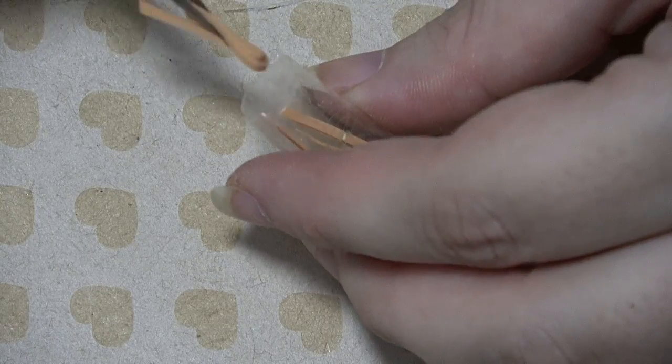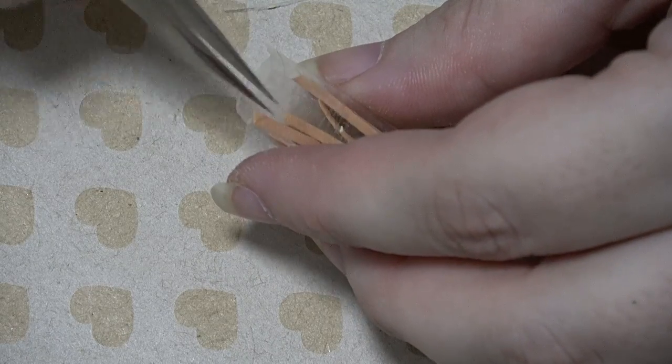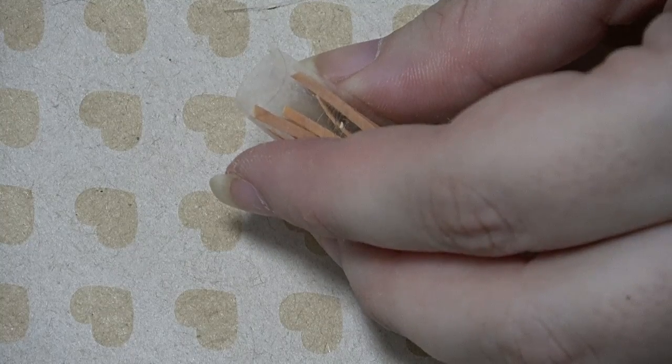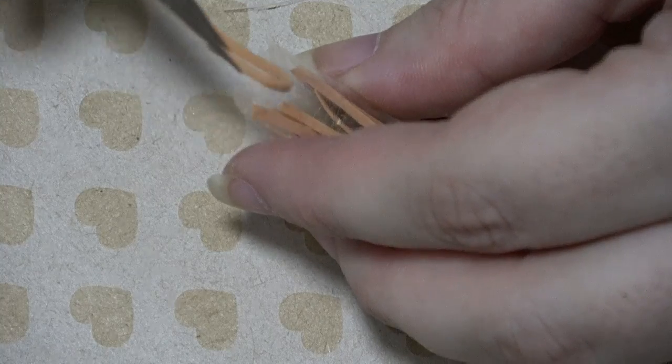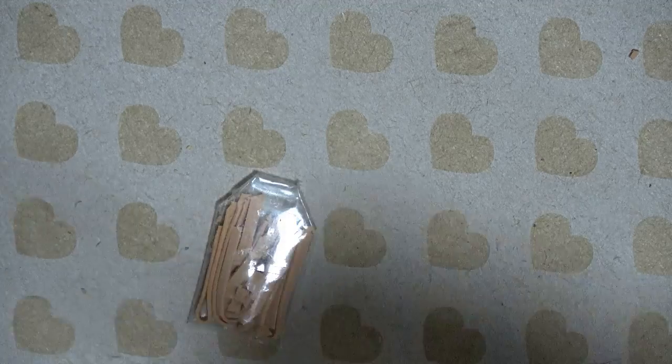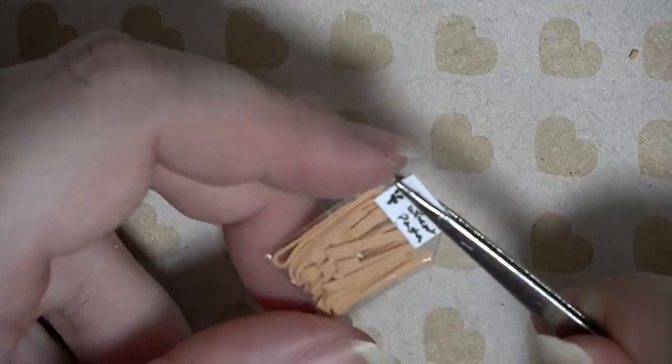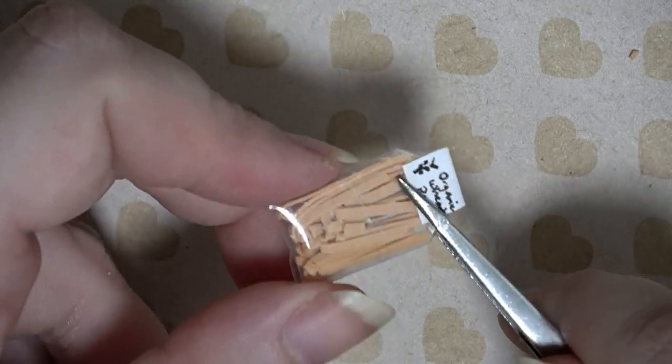Now you can go ahead and stuff the tiny packets with your pasta. Fold up the top however you like and glue the labels to the top.